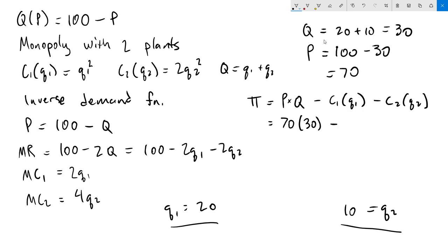The cost of producing in plant 1 is Q₁², so we have 20² = 400. And in plant 2, we have 2Q₂², so 2(10²) = 200. This comes out to 70(30) - 400 - 200 = 2100 - 400 - 200 = 1500. So our total profit is 1500.